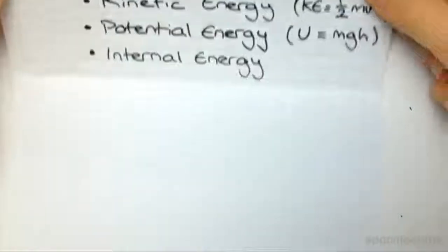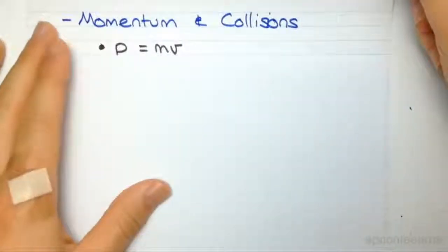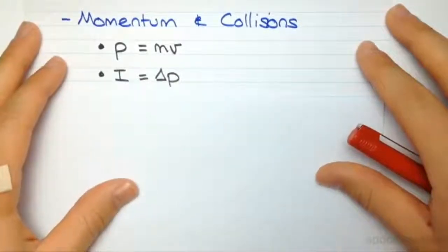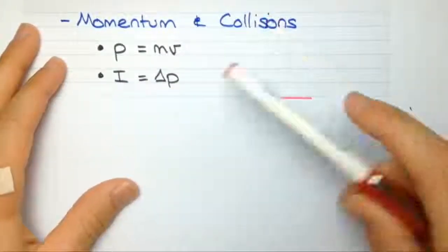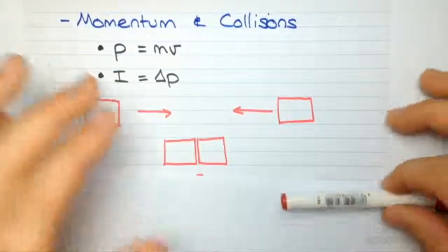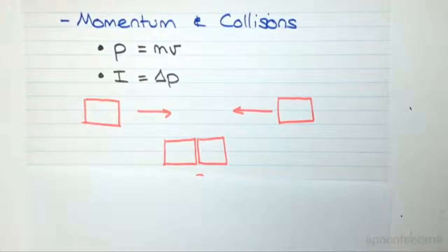We then move on to a topic called momentum and collisions, where we learn what momentum is, as well as another property known as impulse, and how the two are related. We use these properties to examine the forces in a collision, as well as what happens to bodies immediately after they collide.